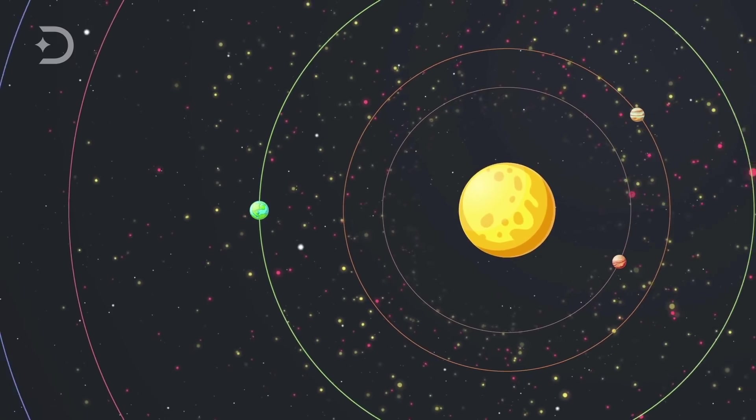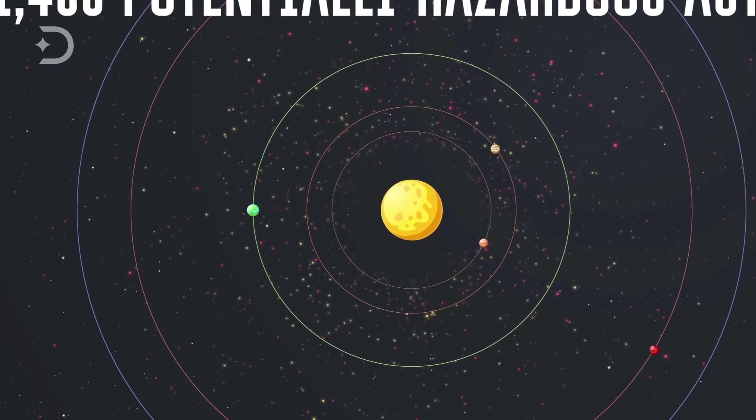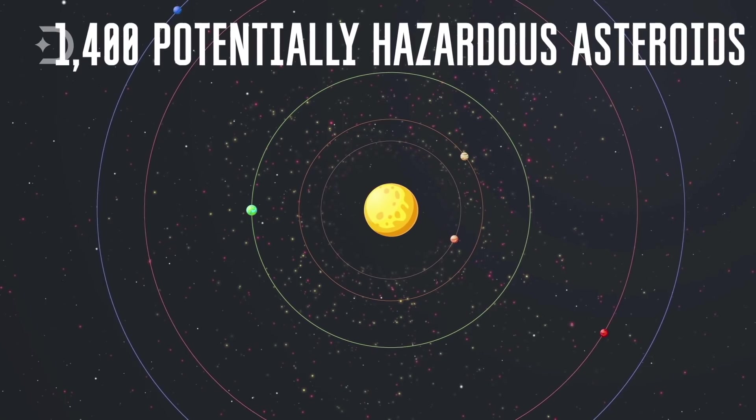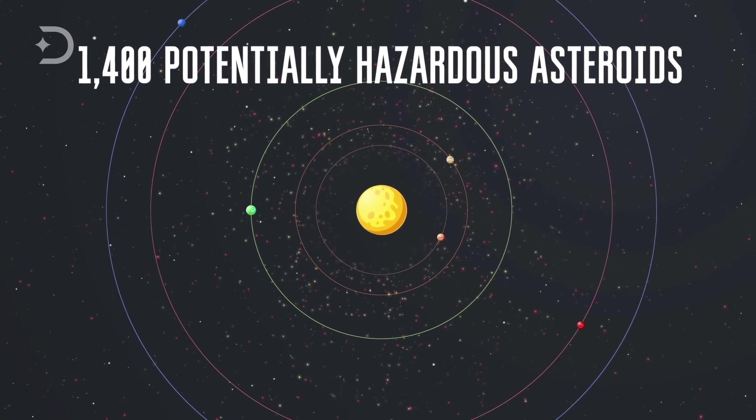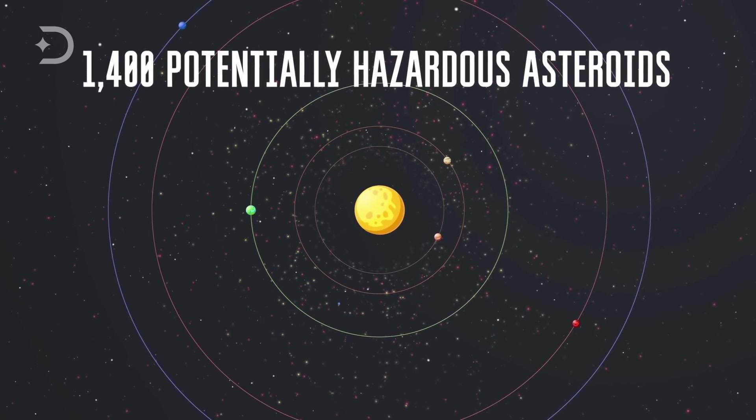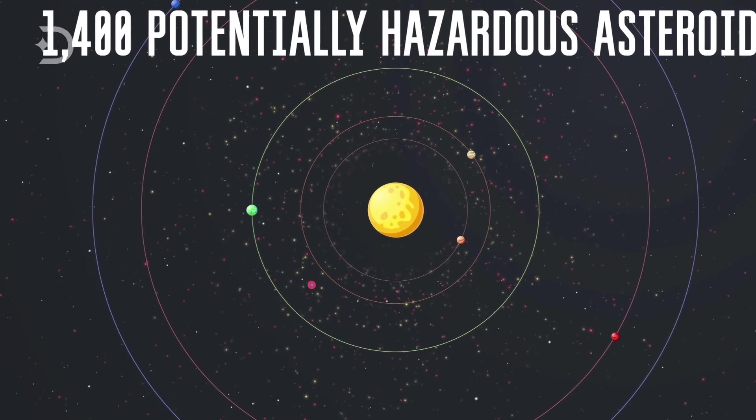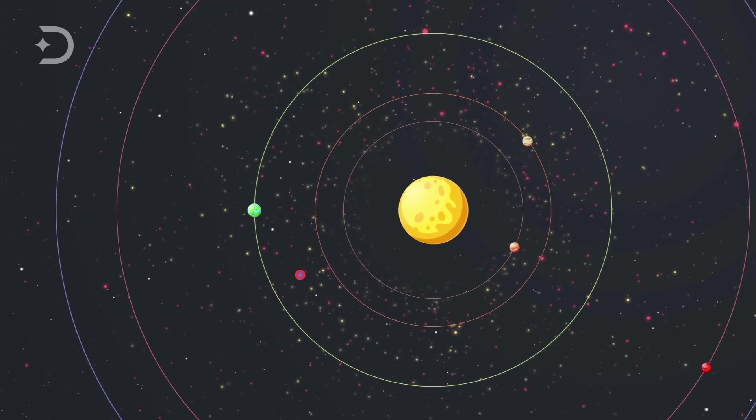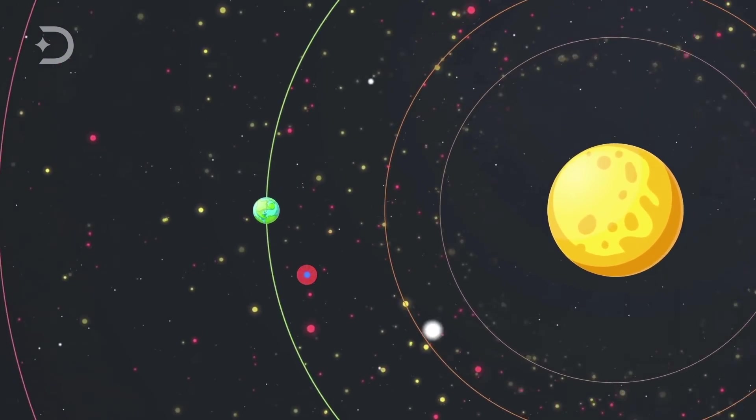But there are other dangerous near-Earth objects out there. In fact, there are over 1,400 potentially hazardous asteroids that have been mapped within close proximity of the Earth and the other planets in our solar system. It is basically a shooting gallery out there, and the more rocks we discover, the higher the chances of us being hit.